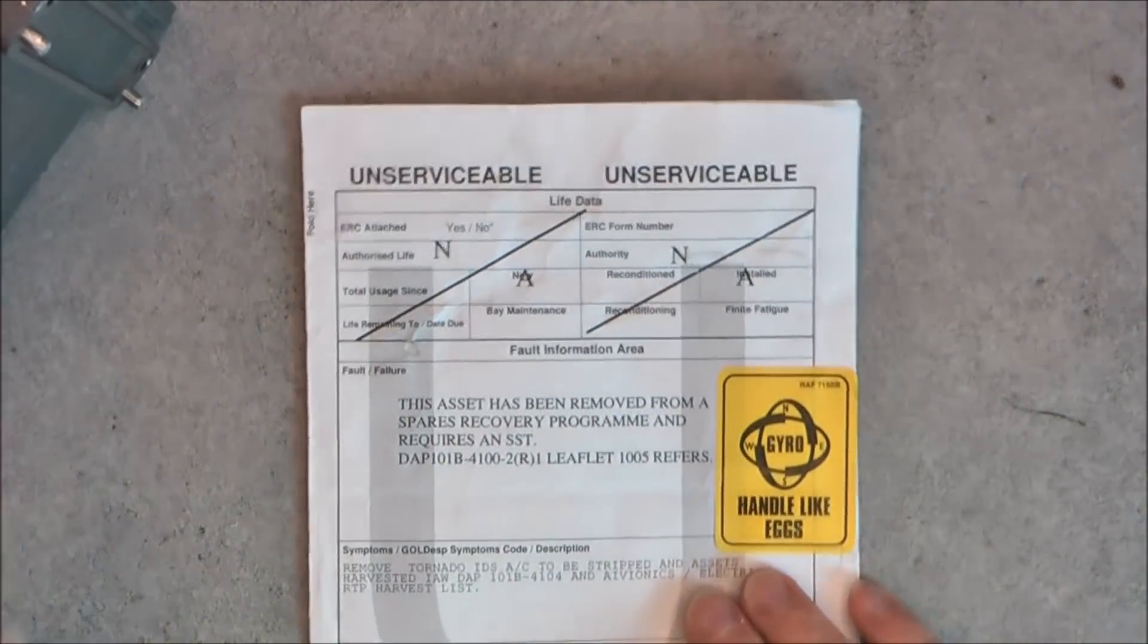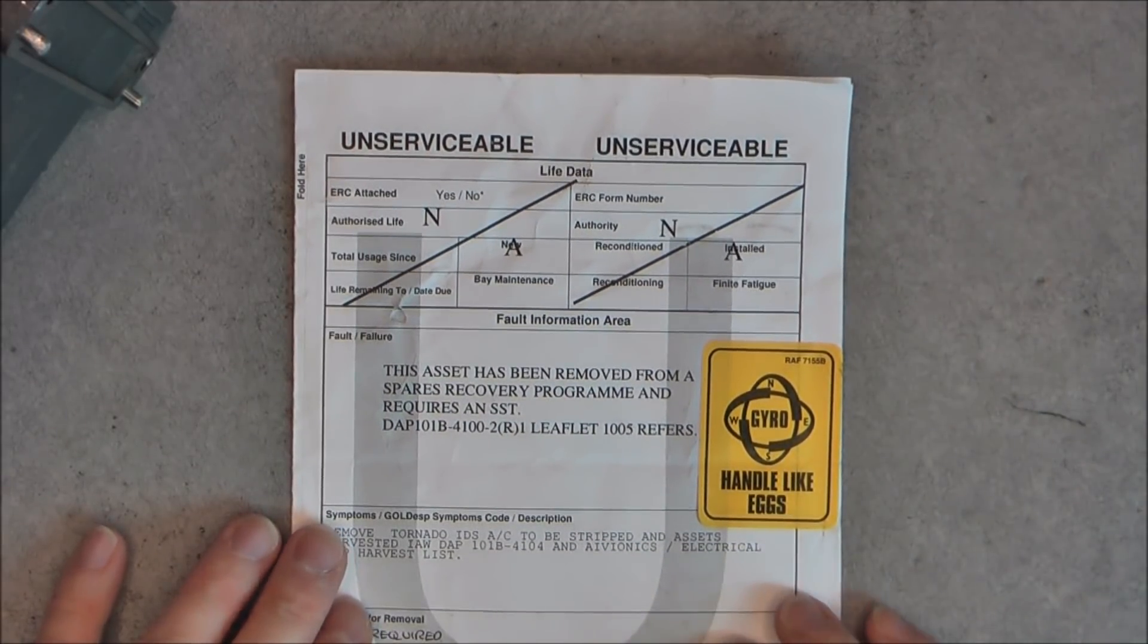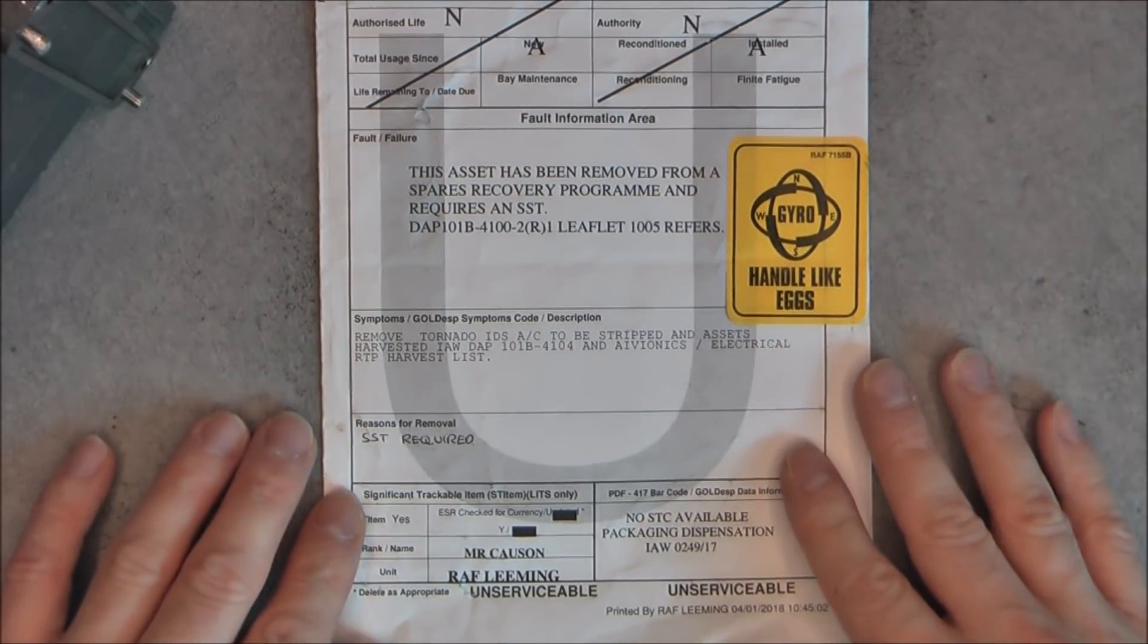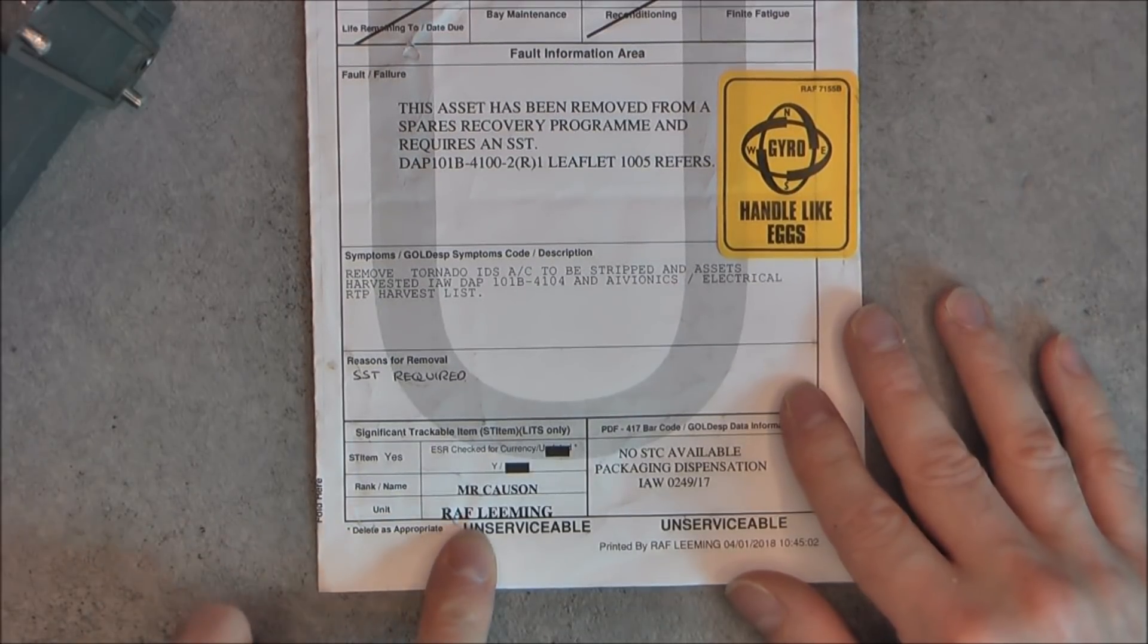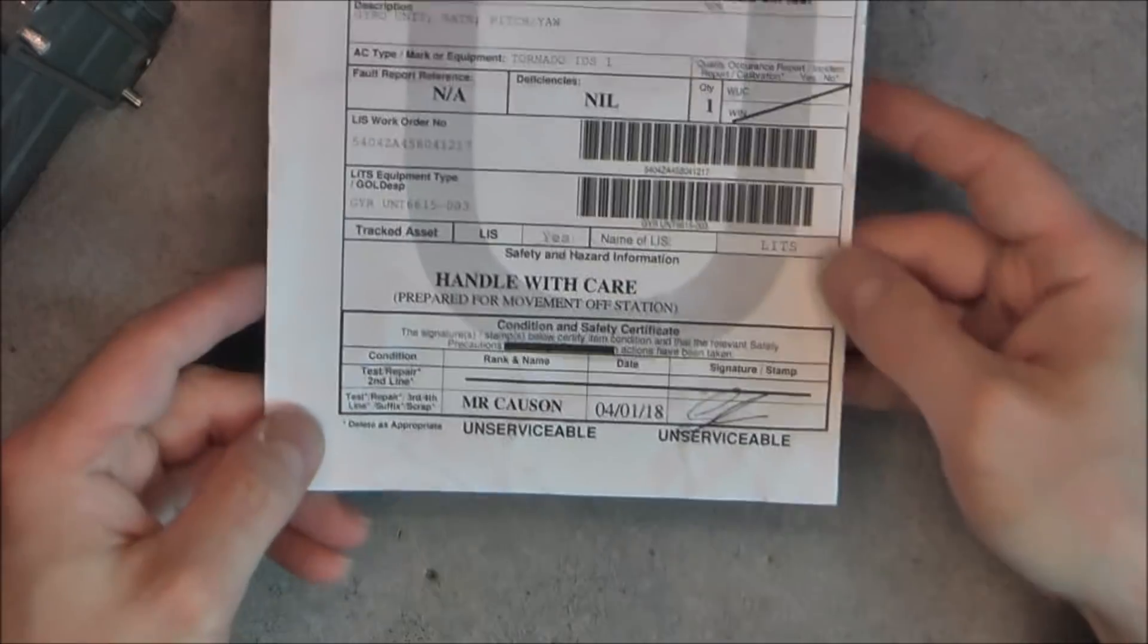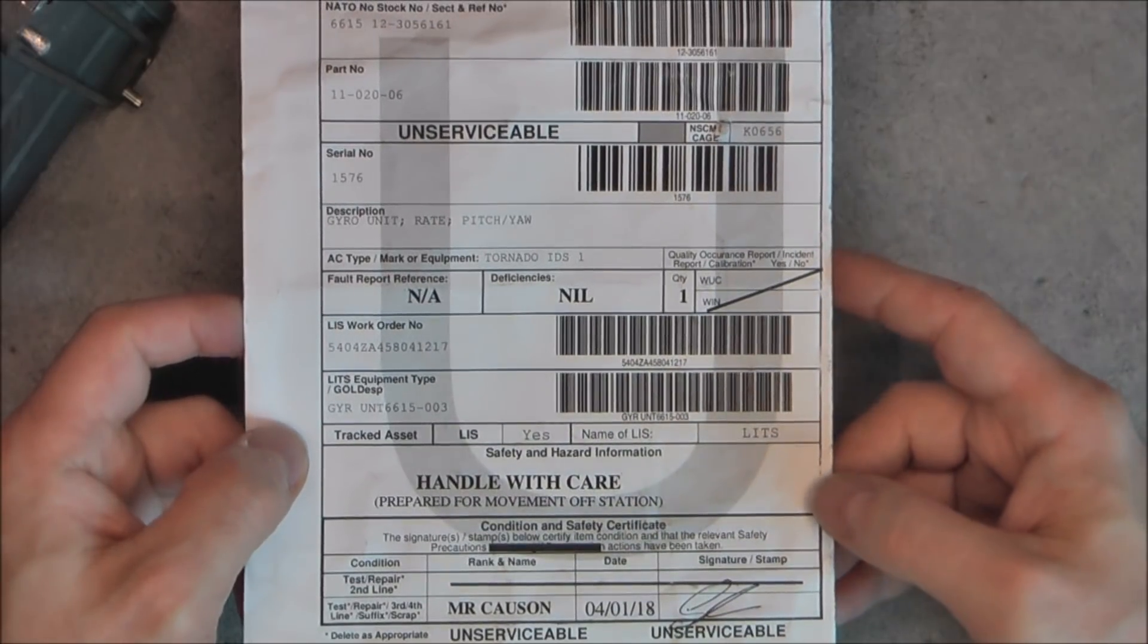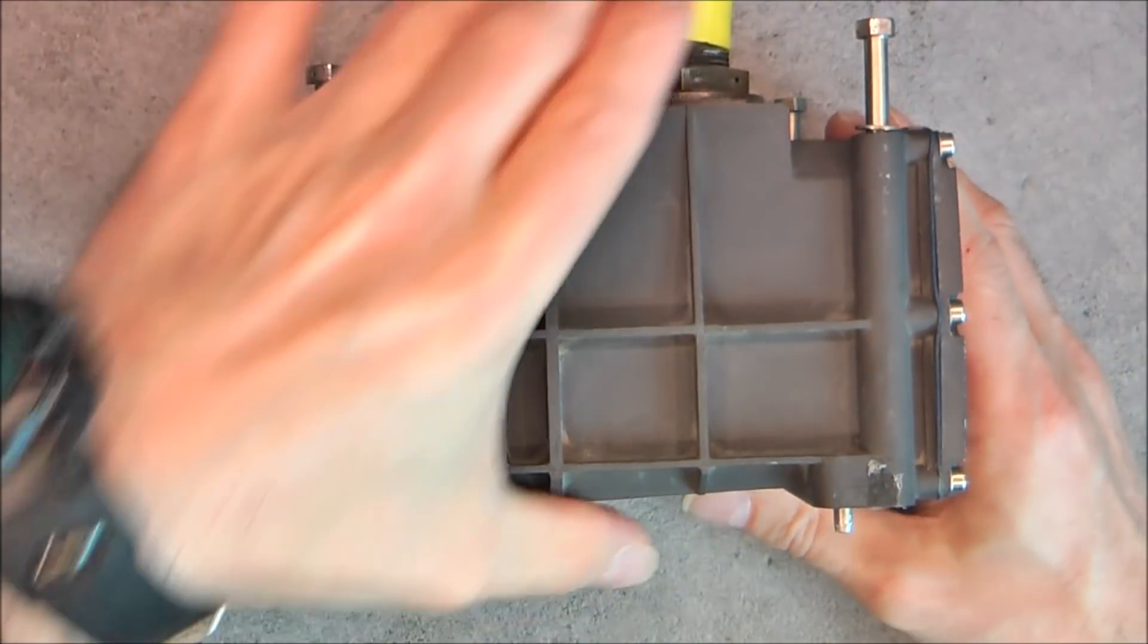I have the paperwork for this device. All the Tornado aircraft has been scrapped and there is a number of parts available for them. It was processed in RAF Leeming airbase and unserviceable because not tested. Actually, it seems in a very good condition. There is no information about the aircraft it came from. Okay, so time to have a look inside.